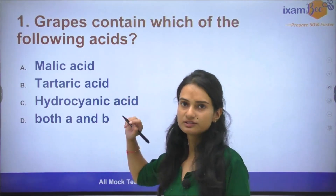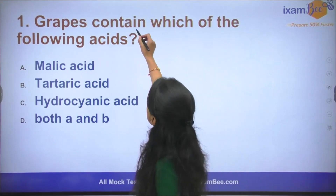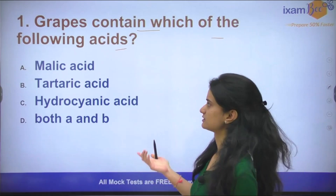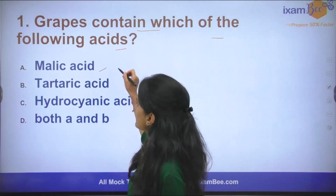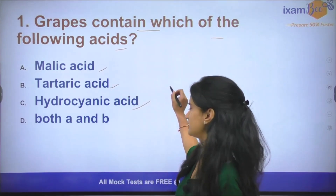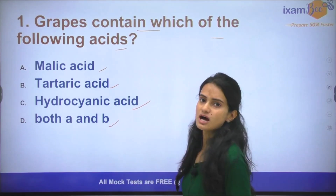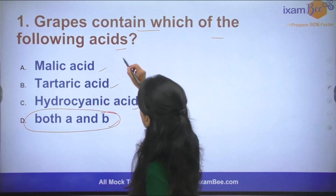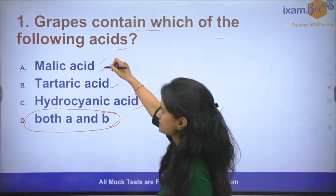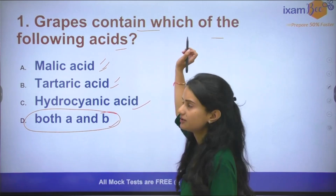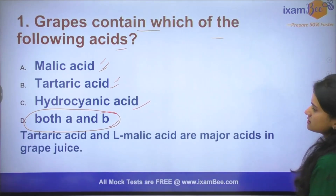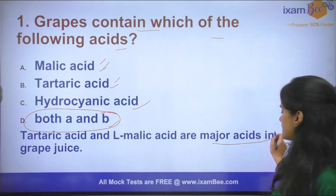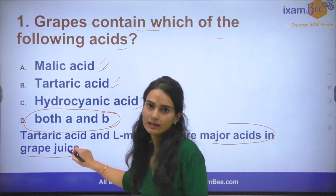Starting from the very first question: Grapes contain which of the following acids? The options are Malic Acid, Tartaric Acid, Hydrocyanic Acid, and both A and B. The answer to the question is both A and B. From grapes, we can get all types of acids — Malic Acid as well as Tartaric Acid. The explanation is that Tartaric Acid and L-Malic Acid are the major acids found in grape juice.